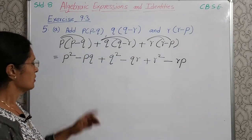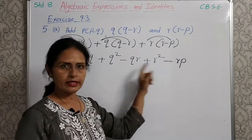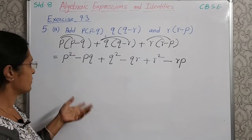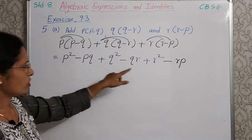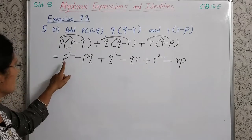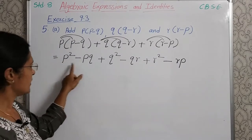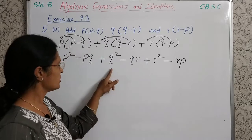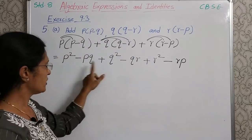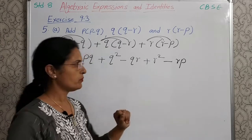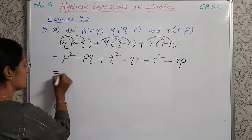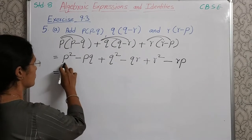Now, see whether there are any like terms. If like terms are there, we will add them or subtract them. But see here, all terms are unlike — different terms. Here P square, no other P square term. Then Q square, R square. So all are unlike. Same here PQ, QR, RP. So we will just rearrange them and that will be our final answer.